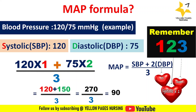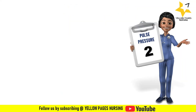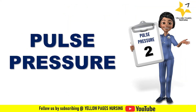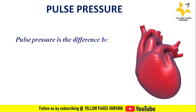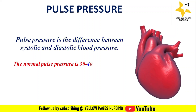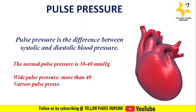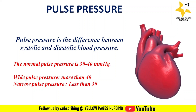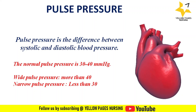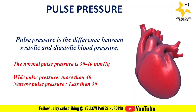Next comes pulse pressure. Pulse pressure is the difference between systolic and diastolic blood pressure. The normal pulse pressure is between 30 to 40 mmHg. Any pulse pressure above this range is called wide pulse pressure, and pulse pressure lower than 25 mmHg is called narrow pulse pressure. Pulse pressure helps to determine stroke volume and compliance of arteries.